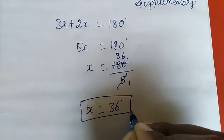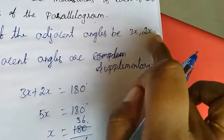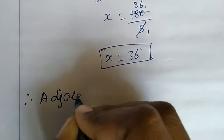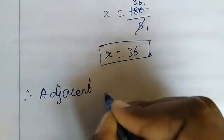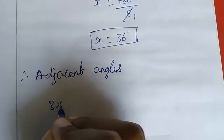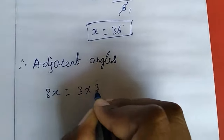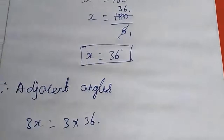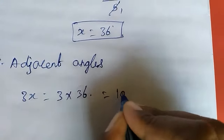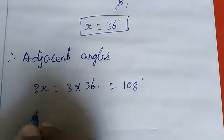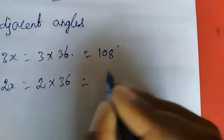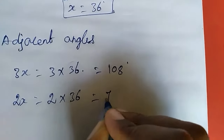We need the adjacent angles, that is 3x and 2x. Therefore, 3x equals 3 into 36, which is 108 degrees. And 2x equals 2 into 36, which gives 72 degrees.